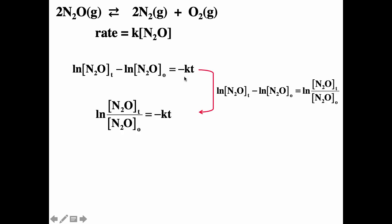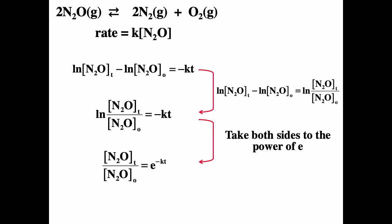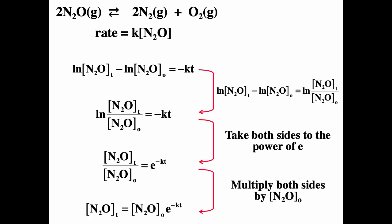This is a nice equation: the natural log of concentration at time t — subscript t means at time t — minus the natural log of the initial concentration (subscript zero means initial) equals minus kt. Using the log rule that ln(A) − ln(B) = ln(A/B), we can rewrite this. Taking everything to the power of e gets rid of the natural log, giving us concentration at time t over initial concentration equals e to the minus kt. Multiplying both sides by the initial concentration, we get the concentration at time t equals the initial concentration times e to the minus kt.